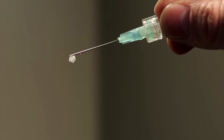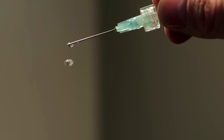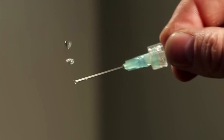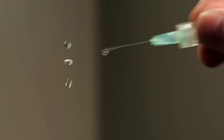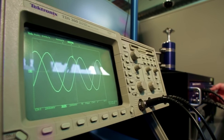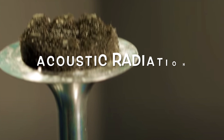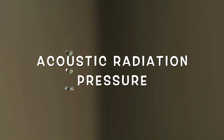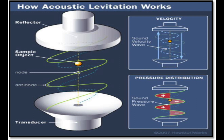The most commonly used frequency for levitation is in the range of 20 kHz to 40 kHz, which is beyond the range of human hearing. When these waves come into contact with an object, they create areas of high and low pressure, which can be used to suspend the object in mid-air. This is possible due to the phenomenon known as acoustic radiation pressure, which occurs when sound waves come into contact with an object. The pressure of the sound waves pushes against the object, creating a force that can be used to levitate it.